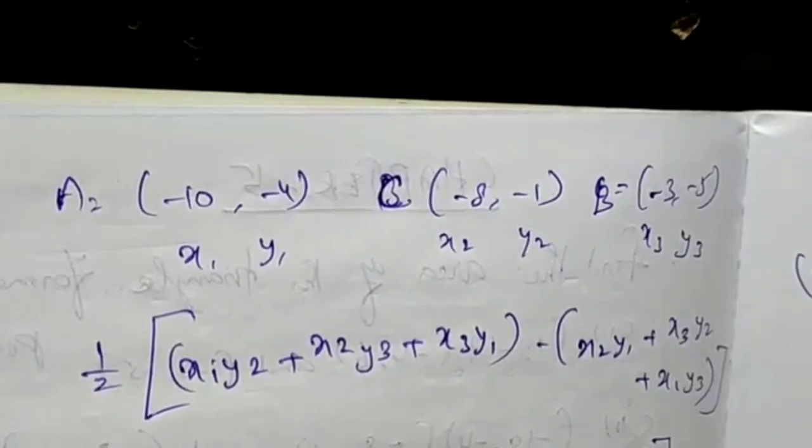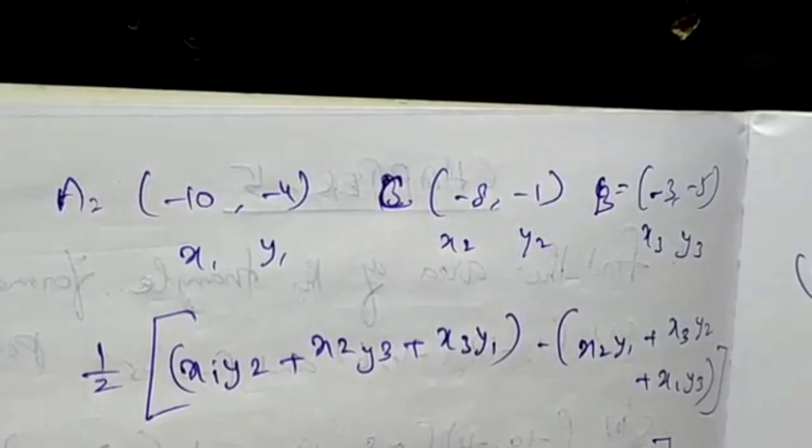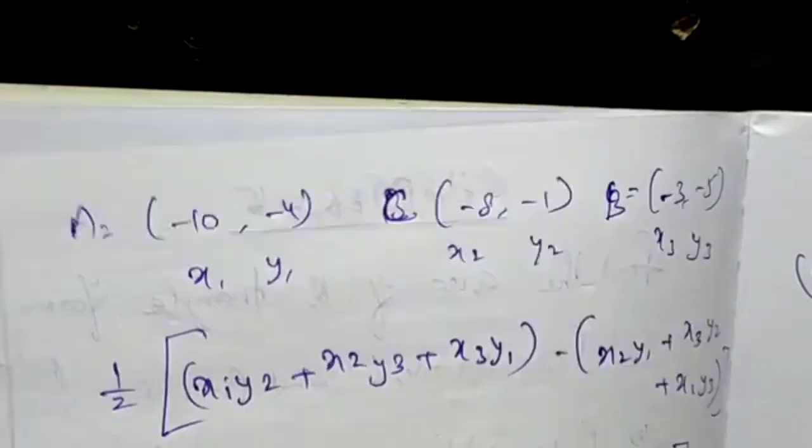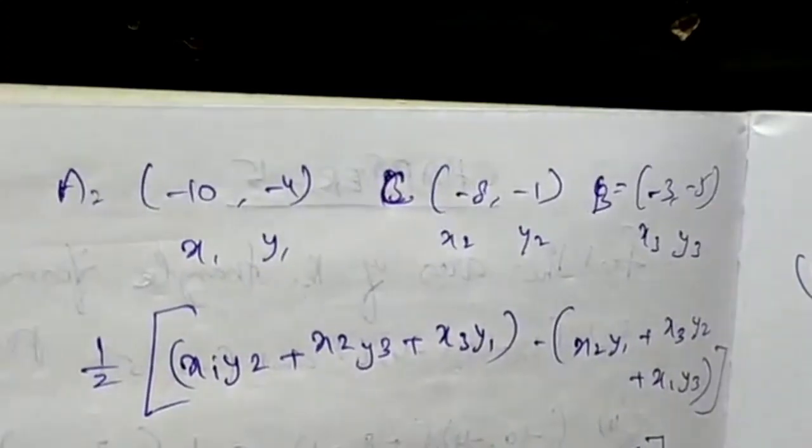First of all, A is (-10, 4), B is (-3, 5), C is (-8, 5).